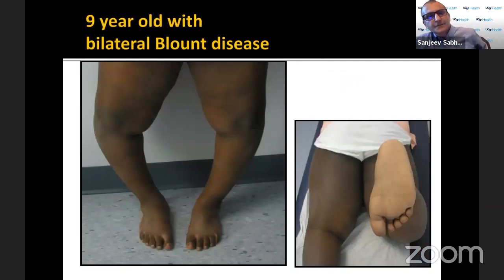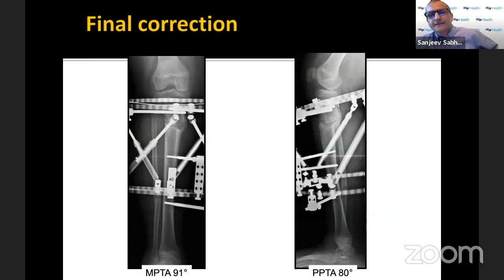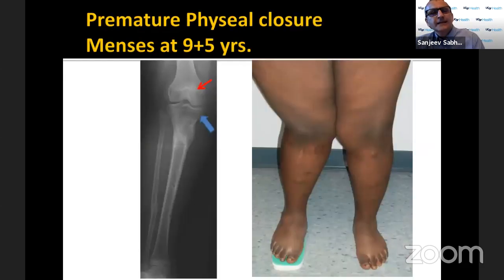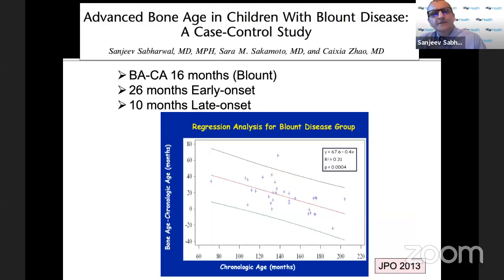Here is an obese child with late presentation of infantile Blount's. We overcorrected slightly and I was happy with the overall correction. But as the frame came off, she was only nine years old and her growth plate had already closed — she had started her menstrual period. We then did a study and found that children with Blount's, because they're obese, get precocious puberty and have advanced bone age. The point is: do not overcorrect and keep this limited growth potential in mind in the obese child with Blount's.